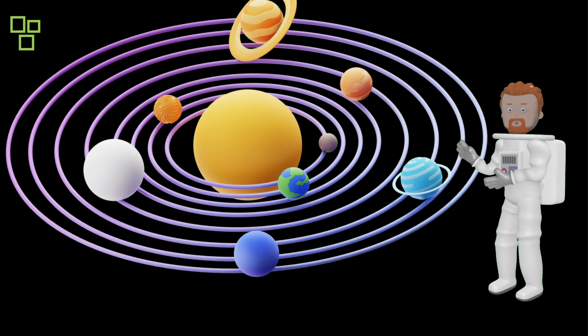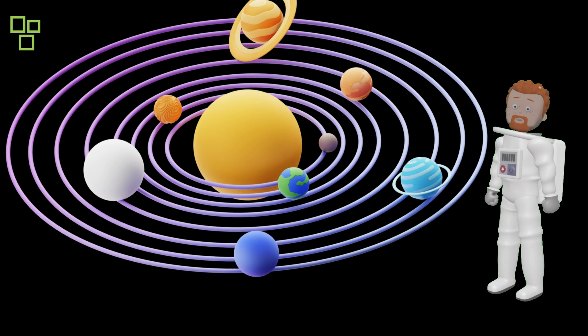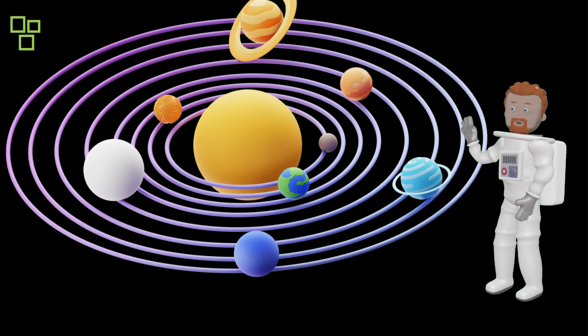The sun is incredibly hot, with temperatures reaching millions of degrees. It's so massive that it holds our entire solar system together with its gravitational pull.